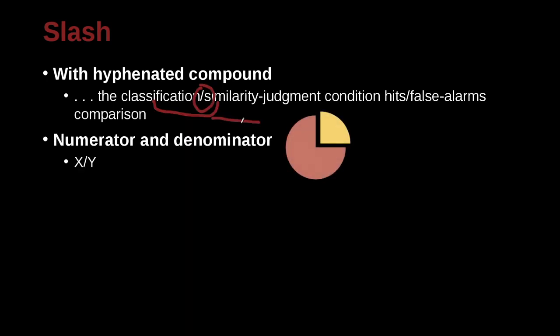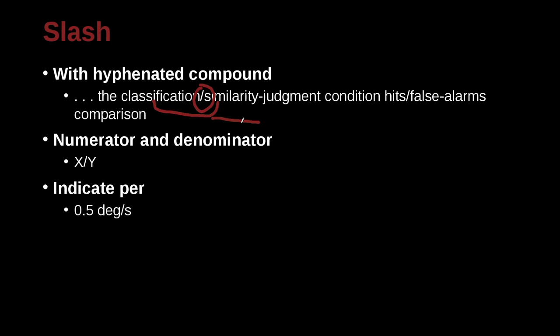Of course, numerator and denominator we often use in math. Very simple. And of course, for the per idea. So here, 0.5 degrees per second. So this every second. Every kilogram.